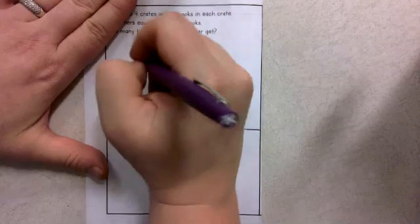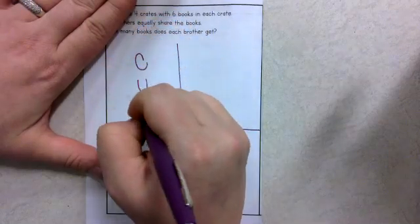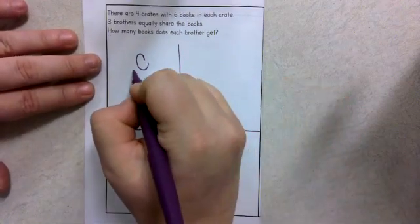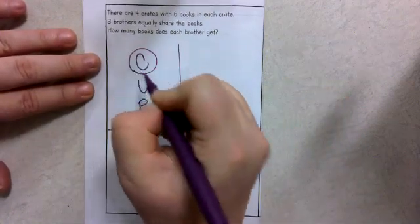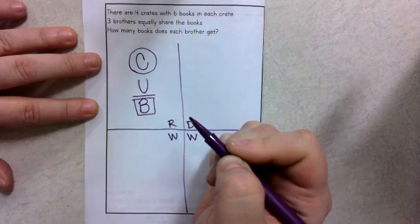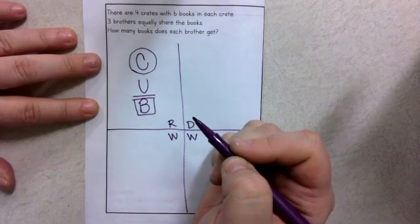When we go through the read process, we use CUB, which is a shortened version of CUBES, if you ever used CUBES. The C in CUB means circle the numbers, the U means underline the question, and the B means box the math words and also draw some boxes as part of a tape diagram.